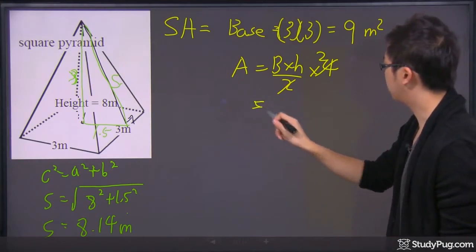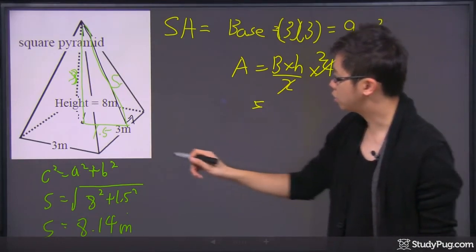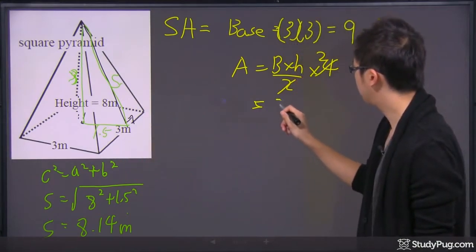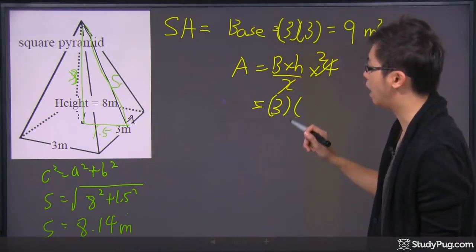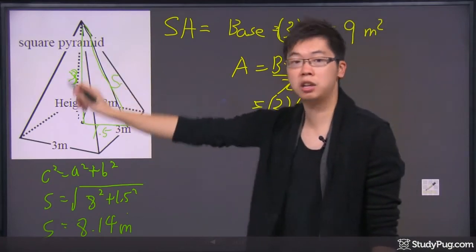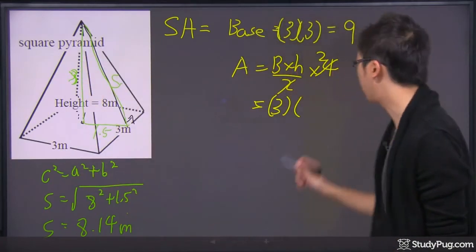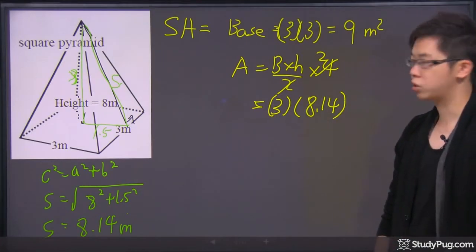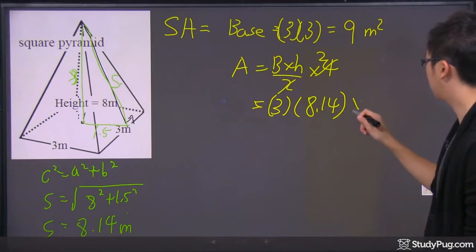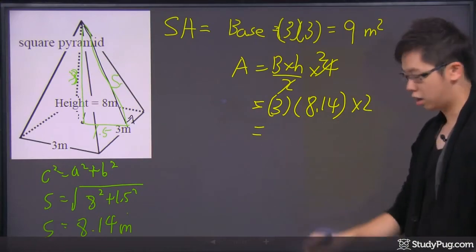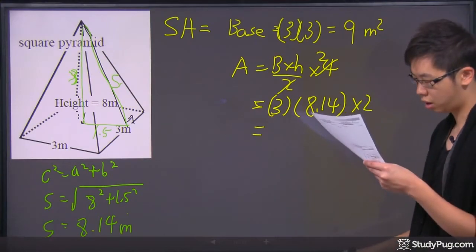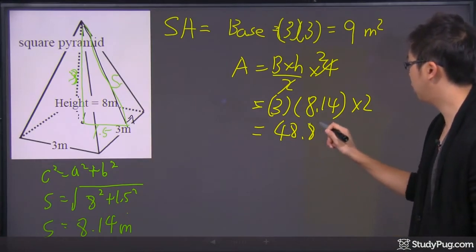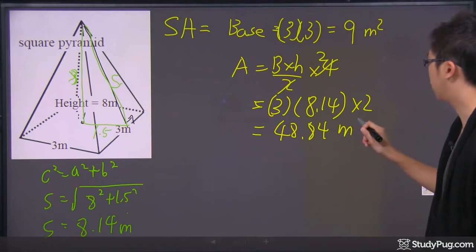So, here we go. My base would be this piece right here, the 3. So, it would be the 3 times the height, but the height is not this height in the middle, not the 8. It's the 8.14 that we just calculated from the very beginning. So, that my 8.14 is right there, and I'm just going to times by 2 to the very end, and I will get the answer to be 48.84, and that's your meter square again.